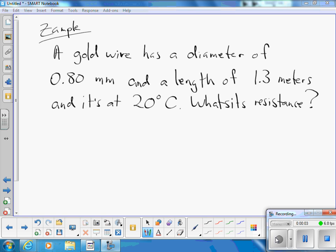My, my, hey, hey, rock and roll is here to stay. We have an example of a gold wire with a diameter of 0.8 millimeters and a length of 1.3 meters, and it's at 20 degrees Celsius. We want to know what its resistance is.